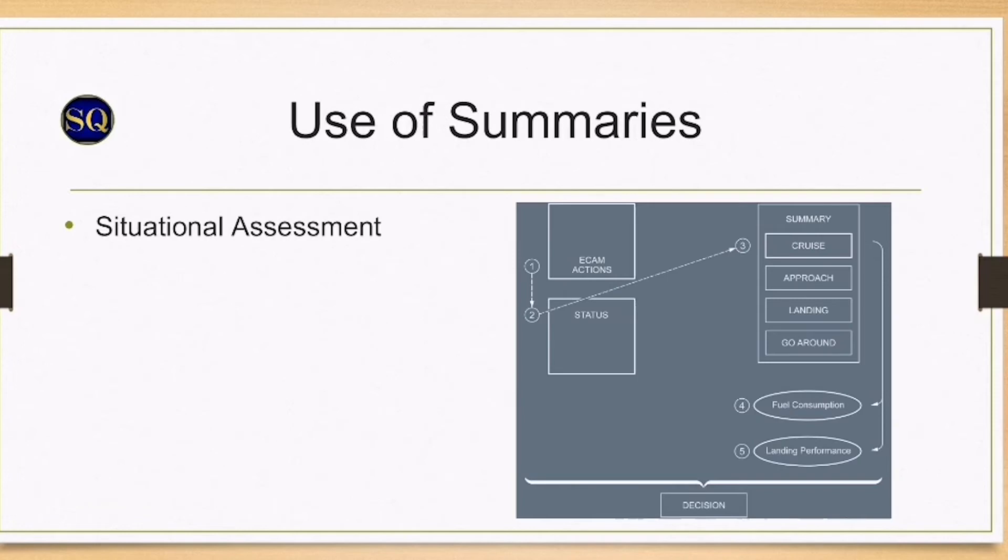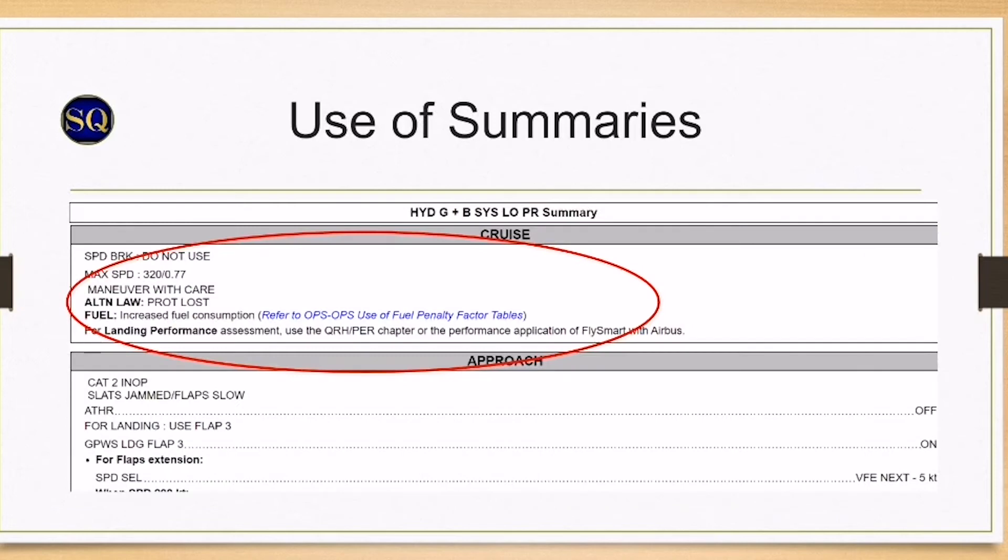Situational assessment using QRH summary. Pilot monitoring locates the QRH hydraulic green and blue system low pressure summary. The pilot monitoring reads the cruise section of the summary. The cruise section helps in making a situation assessment if an immediate landing is not possible. Consider increase fuel consumption under operational data in the QRH to calculate landing distance and V approach. Refer to QRH in-flight performance or use EFB.